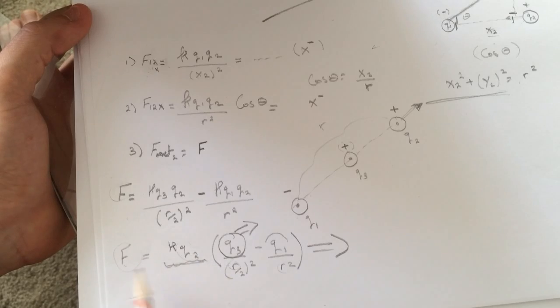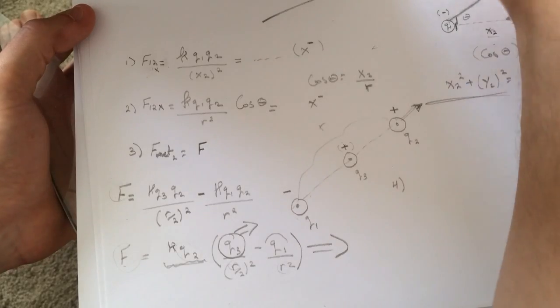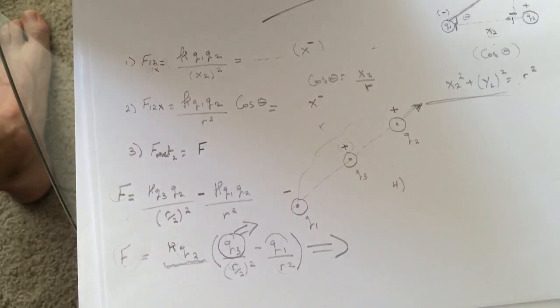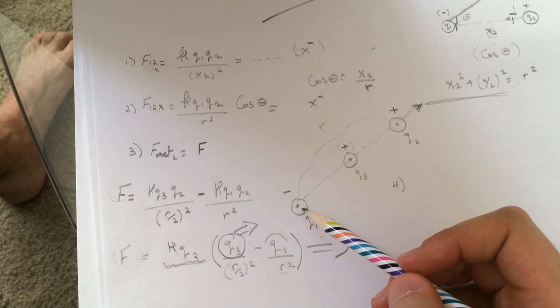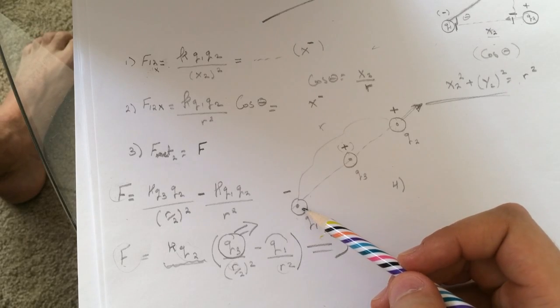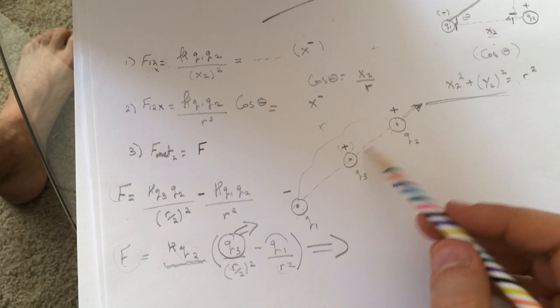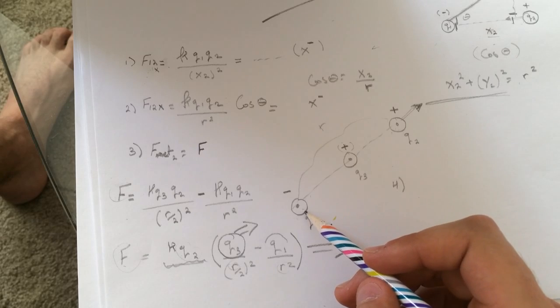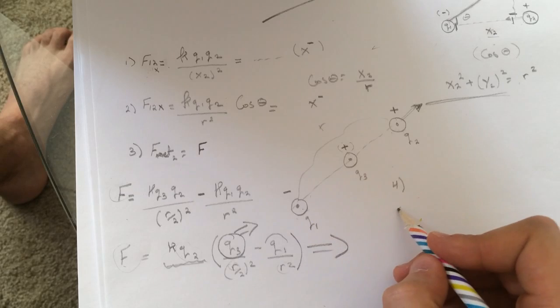And then the last question number four there's number five too. How would you change Q1 to make the force on Q2 equal to zero by keeping those two fixed? We need to increase the magnitude of this guy and keep it the same sign.